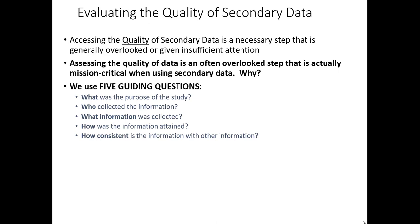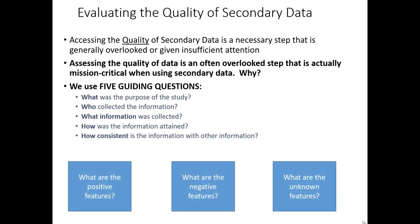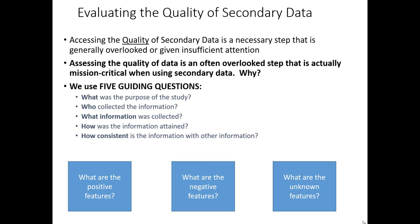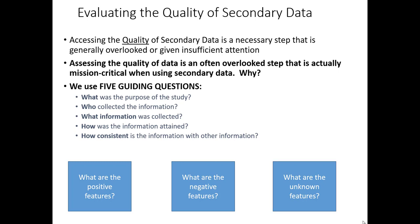While we ask these five questions, there are three buckets of answers that we may place our answers into. First, when we answer some of those questions, we might realize they are positive features, enhancing the quality of the secondary data in our mind. Then we'll usually notice there are some negative aspects of that secondary data. And then finally, and most frustratingly, many times the necessary details we want to know about how secondary data was generated are simply not available — they are unknown features — and we have to make a judgment call about whether or not we can live with those uncertainties.